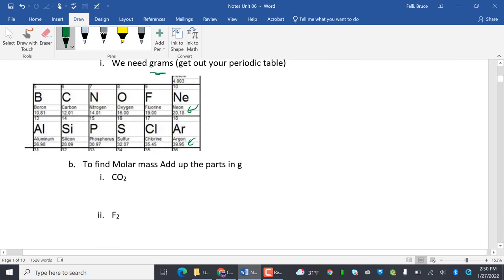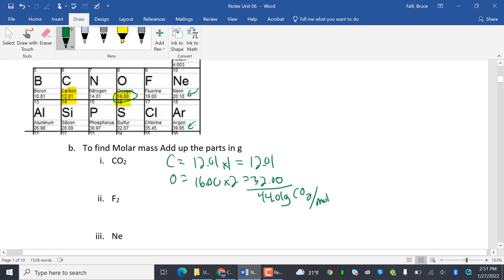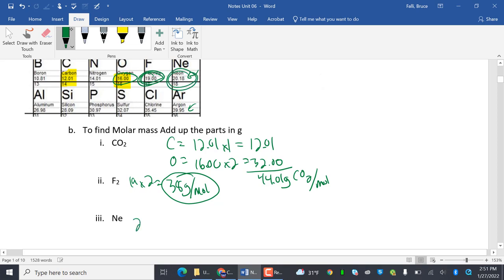To find the molar mass, we're just going to add up the parts in grams. So if I've got CO2, carbon and oxygen, oxygen. So I'm going to have 12.01, that's carbon. Carbon equals 12.01 times 1, that's 12.01. And then oxygen is 16.00 times 2 because CO2 has 2 oxygens, that's 32. I'm going to add that up and I get 44.01 grams of CO2 per mole. F2. See how F is just 19? F is diatomic. 19 times 2 is 38 grams per mole. Neon is not diatomic. So I just go to the periodic table. 20.18 grams per mole.